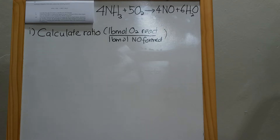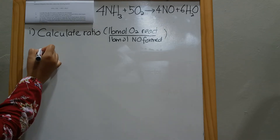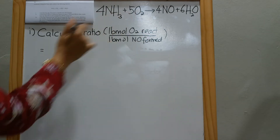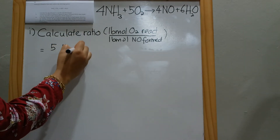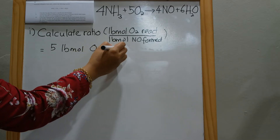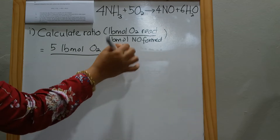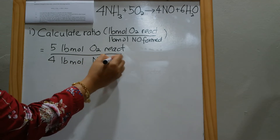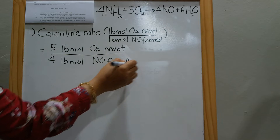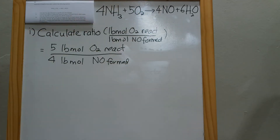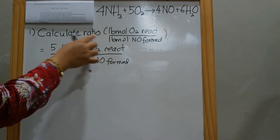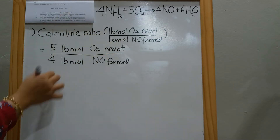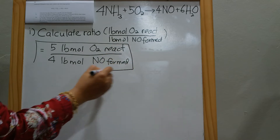The answer to question one is straightforward — we just take the stoichiometric ratio. The stoichiometric coefficient of O2 is 5 pound-mole of O2 reacted, divided by 4 pound-mole of NO formed. Since no units are specified, we use the units given in the question, so the ratio is 5/4.